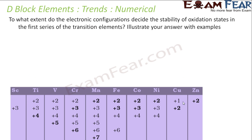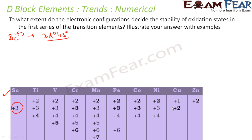To what extent does electronic configuration decide the stability of oxidation states in the first transition series? For Sc³⁺ the configuration is 3d⁰ 4s⁰ — stable (all empty). Ti⁴⁺ is also 3d⁰ 4s⁰ — stable. V⁵⁺ is also 3d⁰ 4s⁰ — stable. These early high oxidation states all achieve the stable empty d-orbital configuration, showing that electronic configuration does govern their stability.